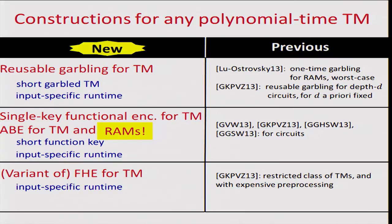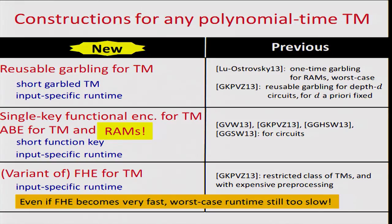Finally, we provide a variant of fully homomorphic encryption for Turing machines, where the homomorphic evaluation over the encrypted data runs in input-specific time and not worst-case running time. Goldwasser et al. had a similar goal but their result was for a restricted class of Turing machines and had an expensive pre-processing step, which we remove. Currently there is significant effort in making FHE practical at Microsoft Research and IBM Research, but even if FHE becomes very fast per gate, it will still be inefficient if evaluation always runs in worst-case runtime. An important step toward practical FHE is to adopt input-specific runtime as in our work.